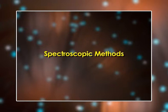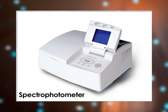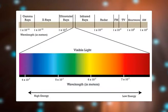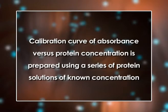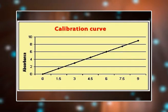The second major method of protein analysis is spectroscopic methods. A number of methods have been devised to measure protein concentration based on UV-visible spectroscopy. These methods use either the natural ability of proteins to absorb or scatter light in the UV-visible region, or they chemically modify proteins to make them absorb or scatter light in this region. A calibration curve of absorbance versus protein concentration is prepared using solutions of known concentration, and the absorbance of the unknown solution is then compared to this curve.